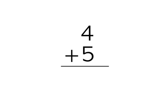So in this problem, 4 plus 5, 4 is the smaller number. We double the 4. 4 plus 4 is 8, and add one more. One more than 8 is 9, so 4 plus 5 is 9.